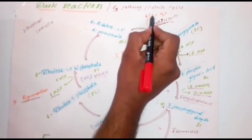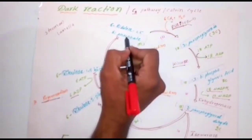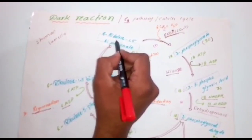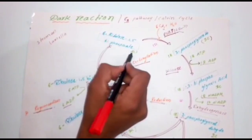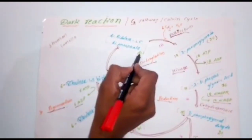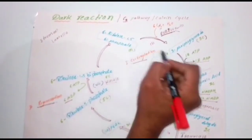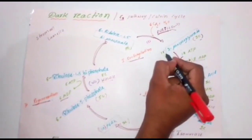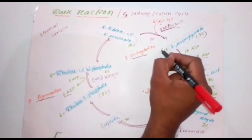6 molecules of carbon dioxide combine with 6 RuBP. 1 carbon dioxide combines with 1 RuBP, so 6 carbon dioxide combine with 6 RuBP. 6 carbon dioxide each have 1 carbon — that is 6 carbons. 6 RuBP each have 5 carbons — that is 30 carbons. 30 plus 6 = 36 carbons total. Since each compound has 3 carbons, 12 moles of 3-phosphoglyceraldehyde are formed.